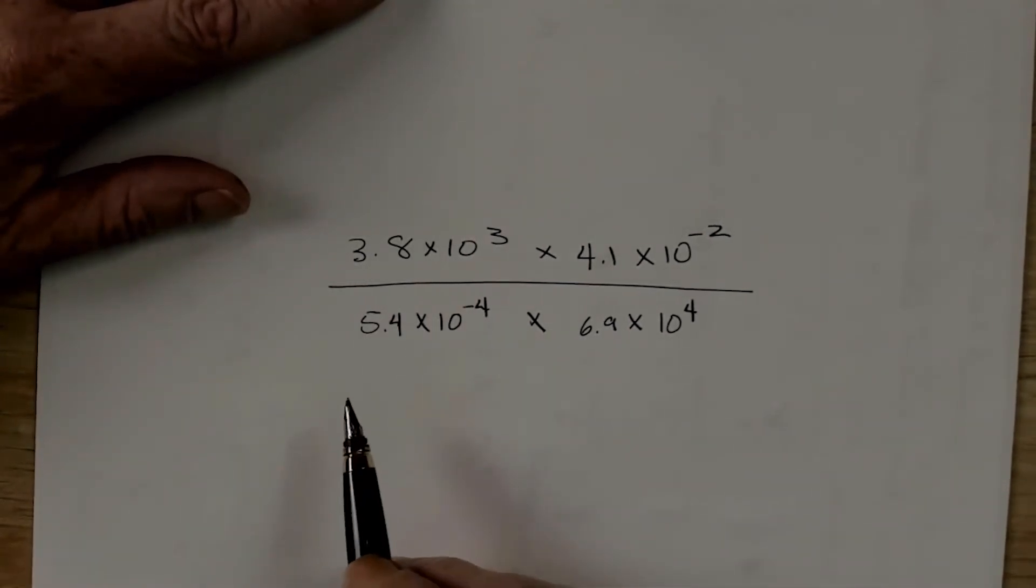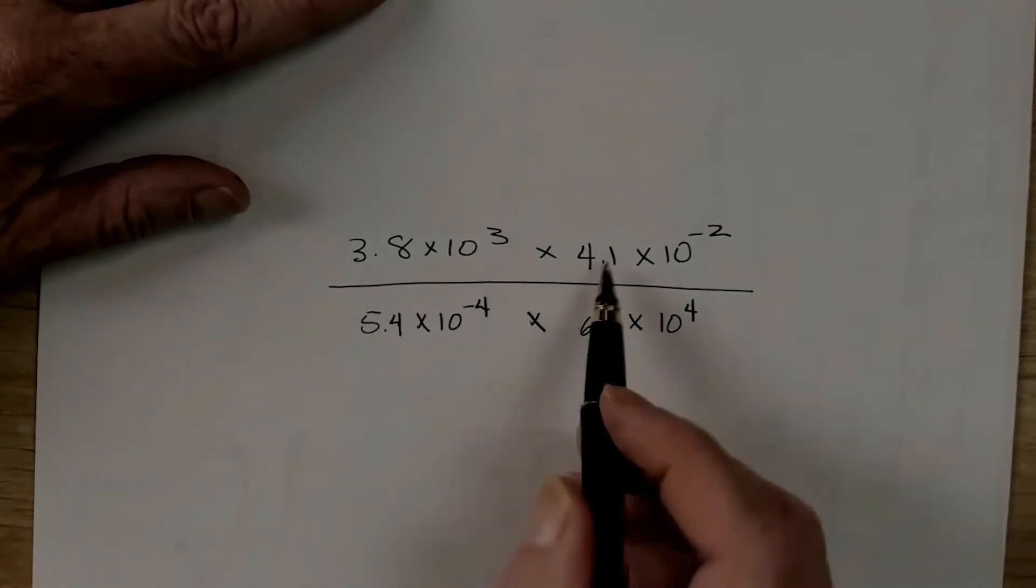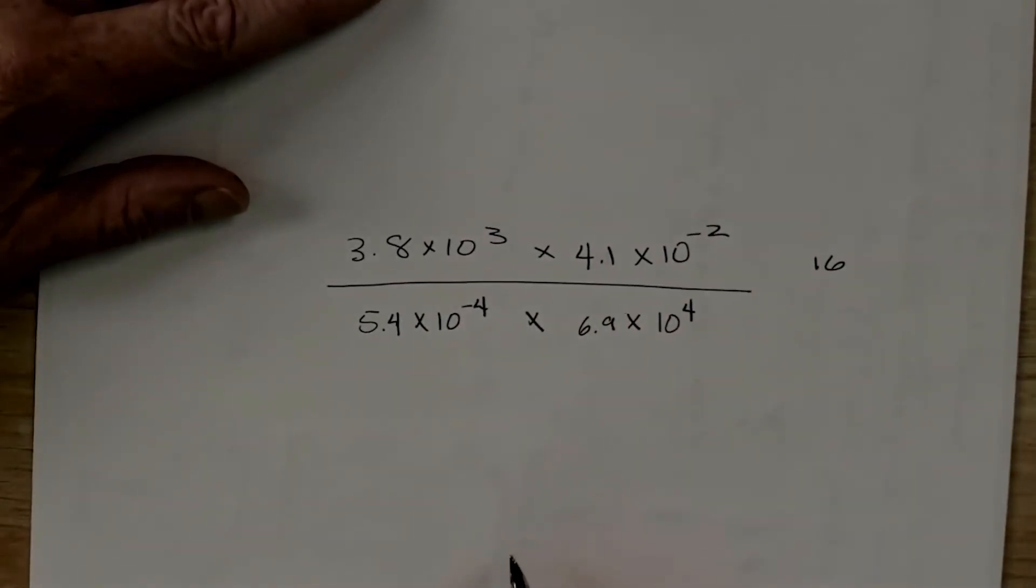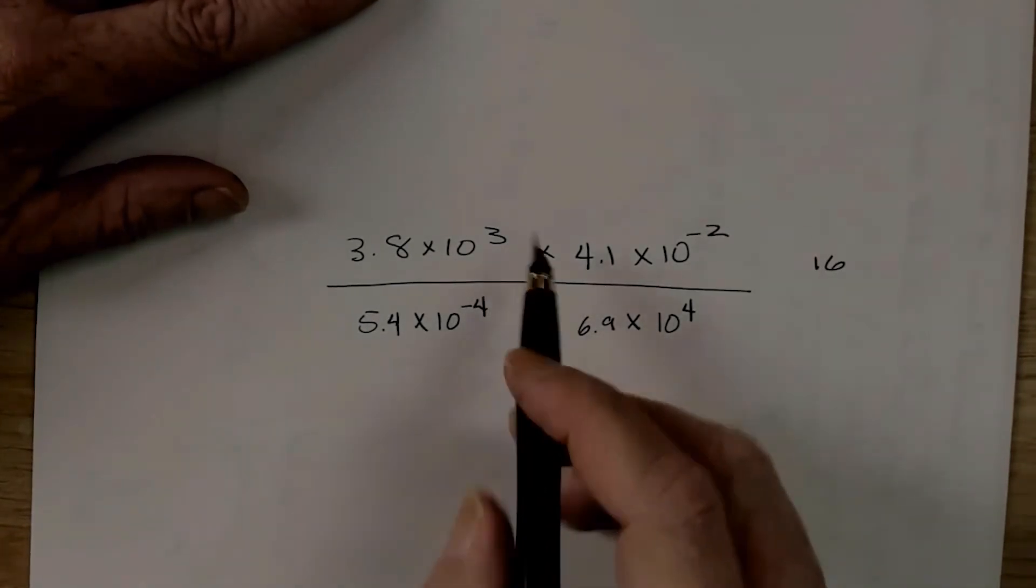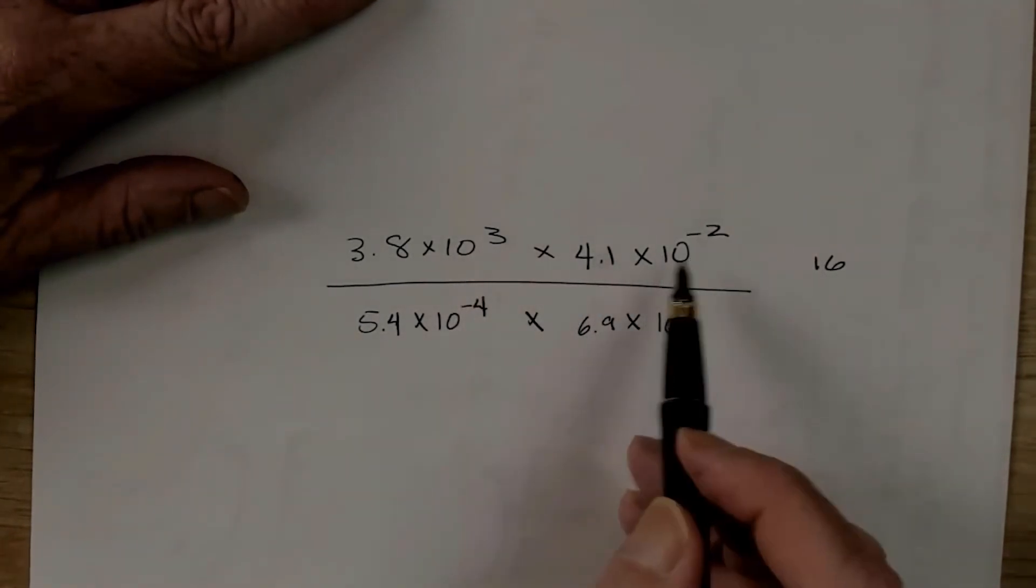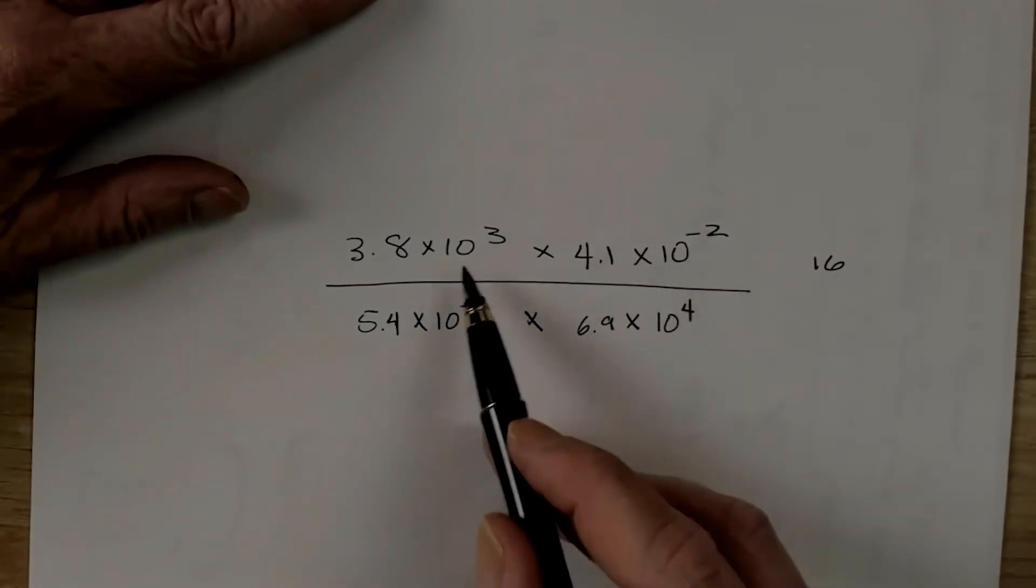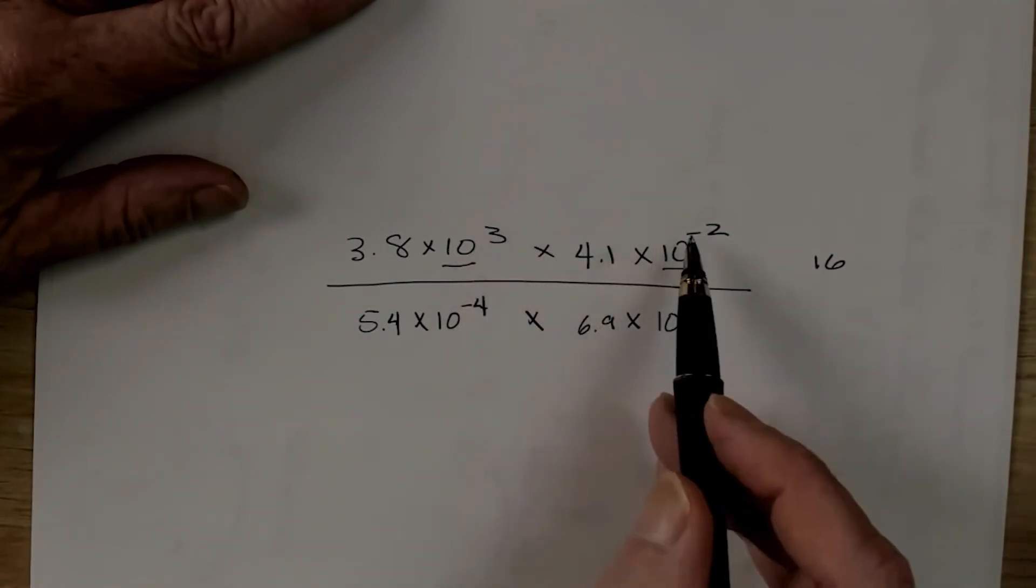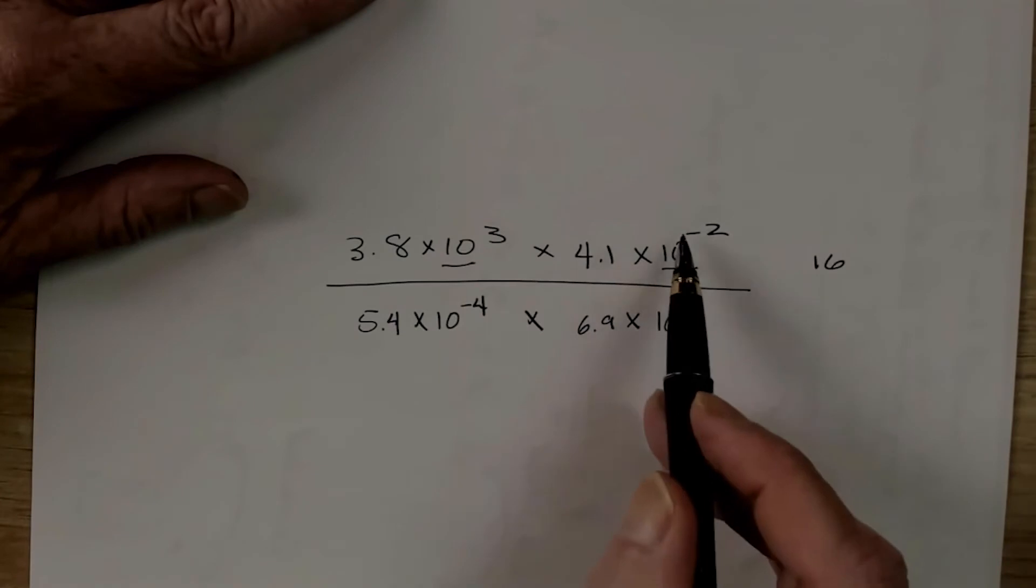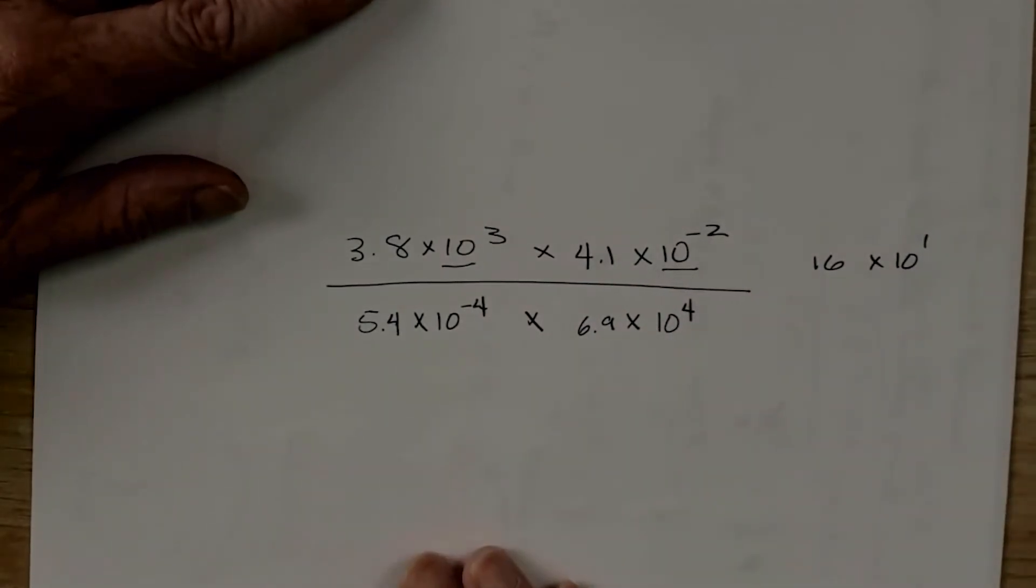3.8 is about 4. 4.1 is also about 4. So, if we multiply those together, we're going to get something in the vicinity of 16. Now, we have 10 to the 3 and 10 to the negative 2 here. These are both base 10. So, we can simply add these two exponents together. So, 3 plus a minus 2 will give us a 10 to the 1.